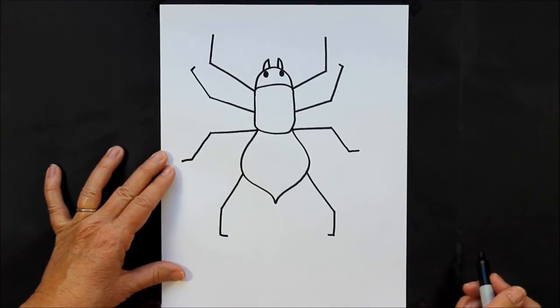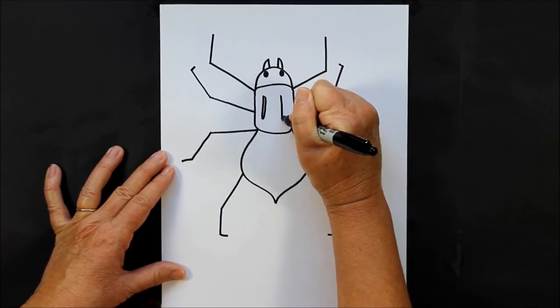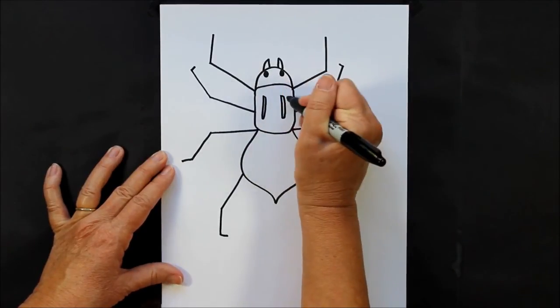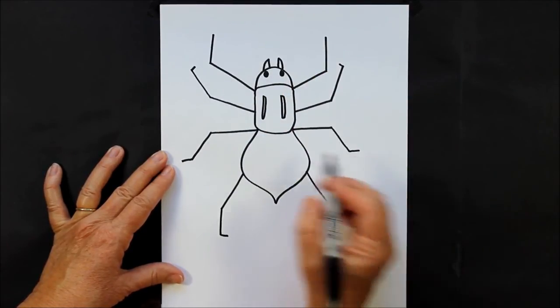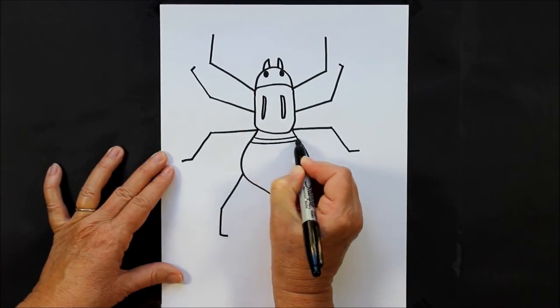Now inside this part of his body, we are going to put some shapes that look like this: straight lines that are closed up. Then to give it a little bit more detail, let's fill in some stripes with our marker.